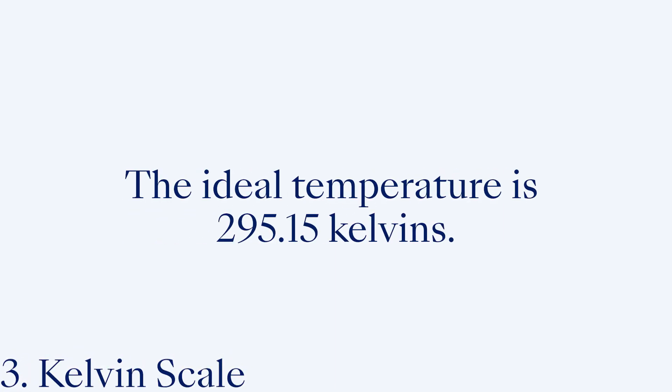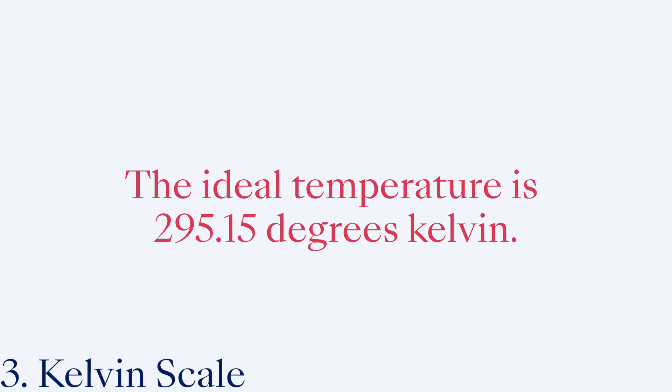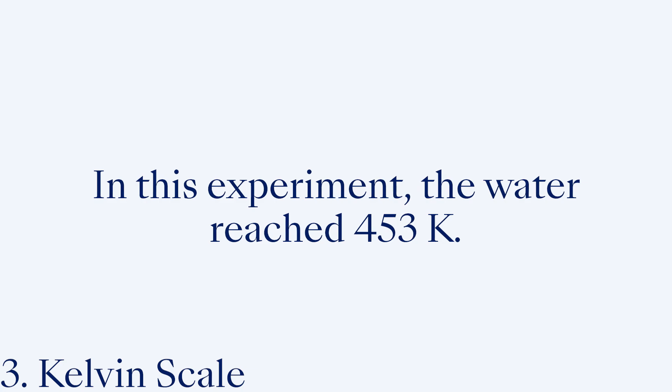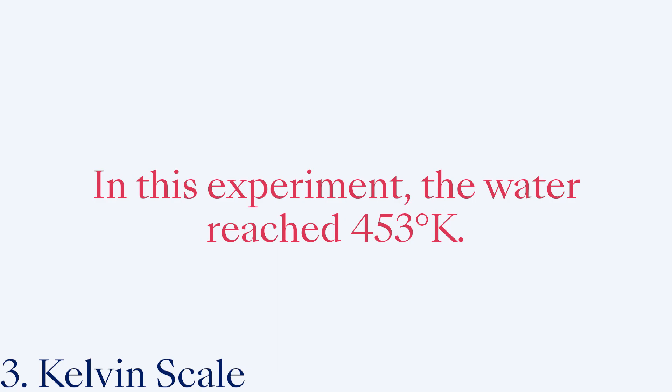The Kelvin scale is used most commonly for scientific measurements. The system is a bit different because it begins at zero and doesn't include any negative temperatures. It also doesn't use a degree symbol. If you're writing a temperature using this scale, you'd simply write 'Kelvins' or 'K.' For example, write 'The ideal temperature is 295.15 Kelvin' — not '295.15 degrees Kelvin.' Or 'The water reached 453 K' — not '453 degree K.'